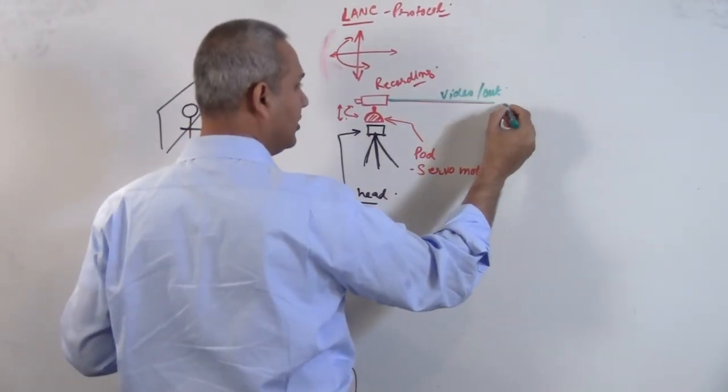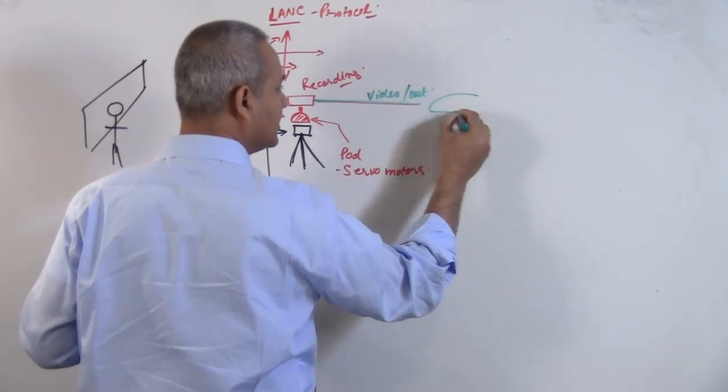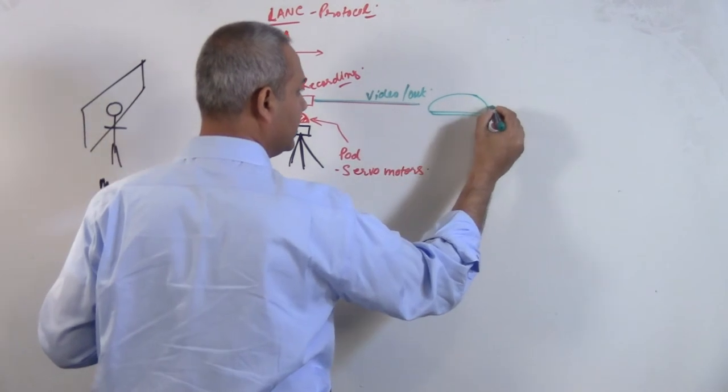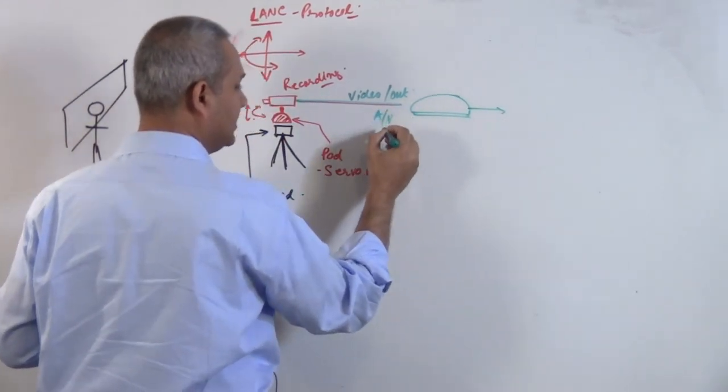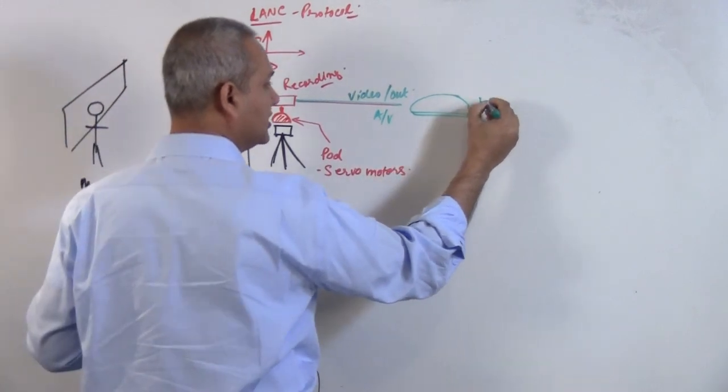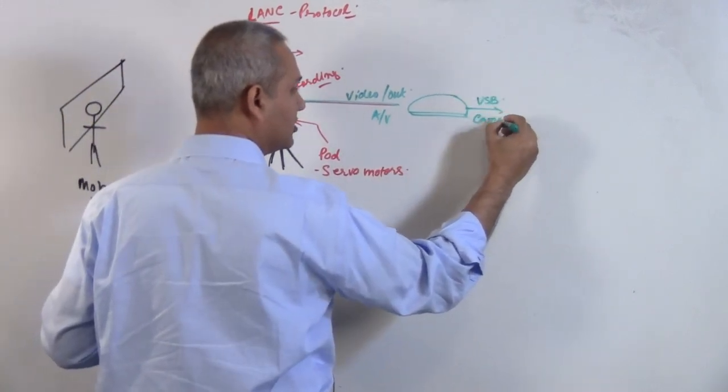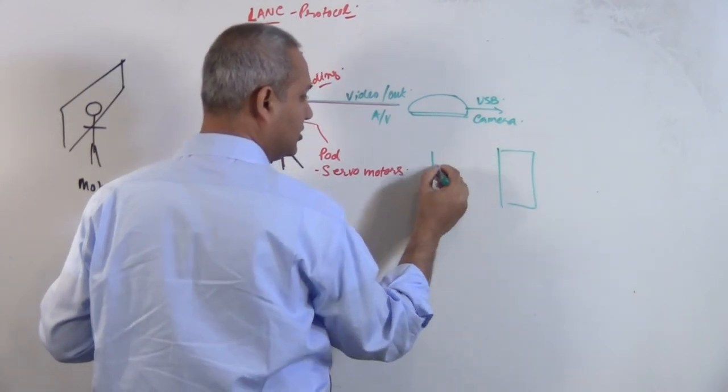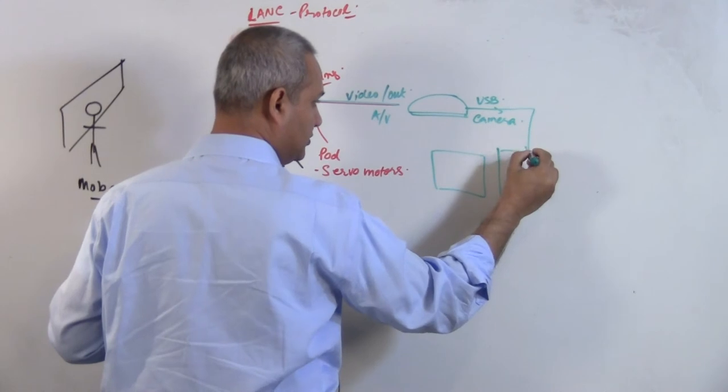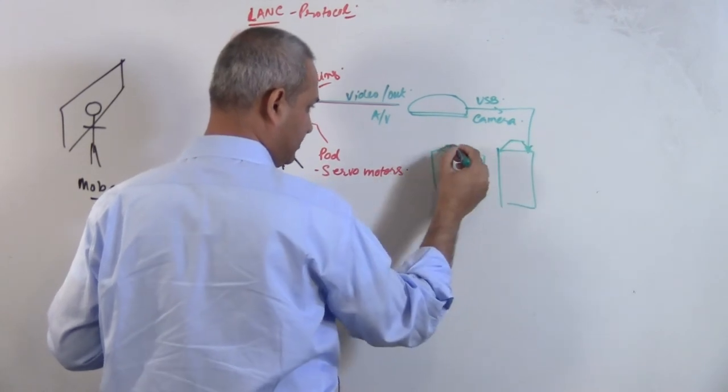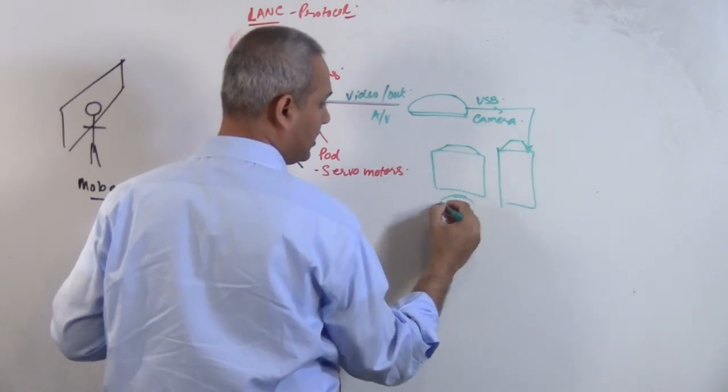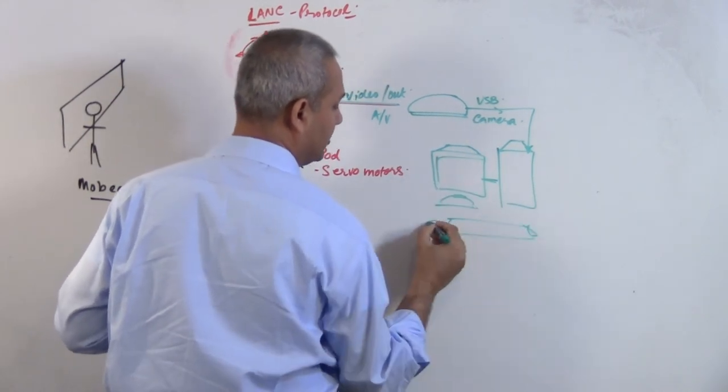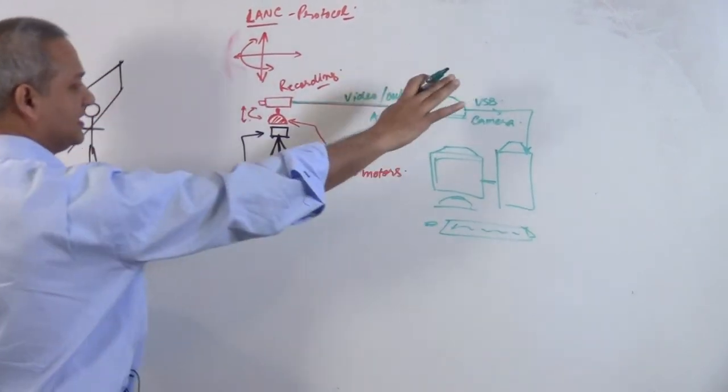This video out is sent into a device which converts the AV output to USB camera output, and that is then connected into a computer. This USB is connected to the computer with a monitor, keyboard, and mouse. That's the basic setup.